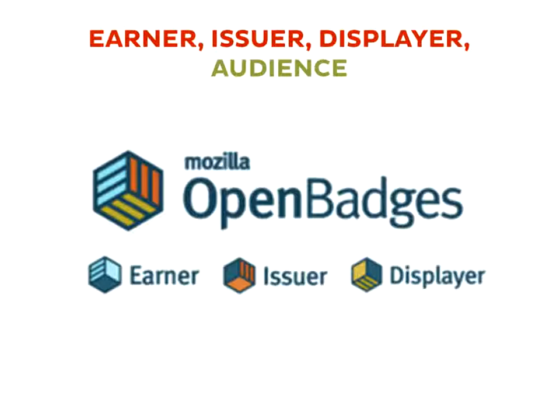What actually happens with these badges? Basically you've got four stakeholders in the open badge ecosystem. You have the earner — the person who earns the badge. You have the issuer — the issuing organization or person. You have the displayer — the stakeholder who agrees to display badges on their platform, such as LinkedIn or a blogging platform like WordPress. And you've got the audience — the people who would actually be looking at badges, such as employers or potential collaborators. For instance, a research journal has decided they're going to issue open badges to authors and reviewers for participating in the editing process.